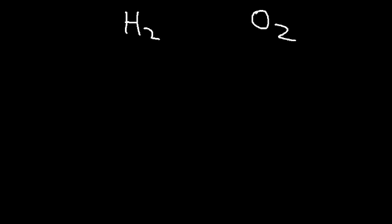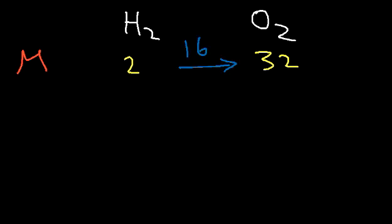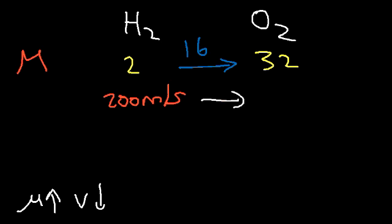Let's consider hydrogen gas and oxygen gas. The molar mass of hydrogen is about 2 and for oxygen it's 32 — an increase by a factor of 16. Since the molar mass increases by 16 from hydrogen to oxygen, and the square root of 16 is 4, the velocity should decrease by a factor of 4. So if hydrogen has a speed of 200 meters per second at a certain temperature, the oxygen molecules would be moving at 50 meters per second at the same temperature.